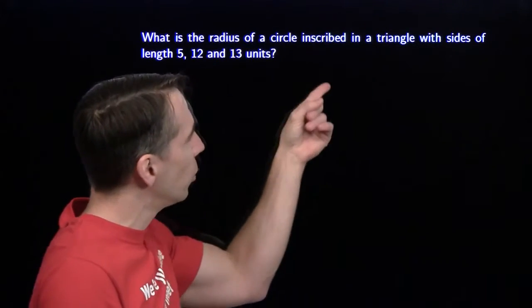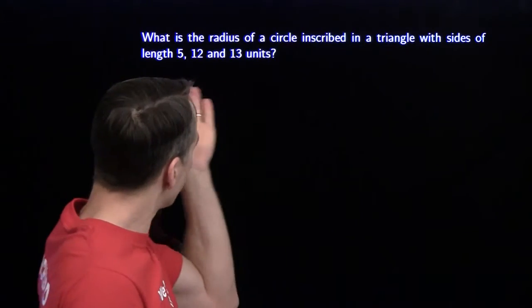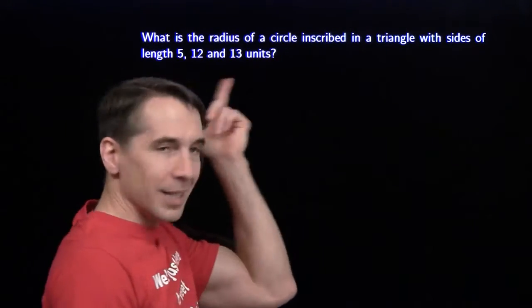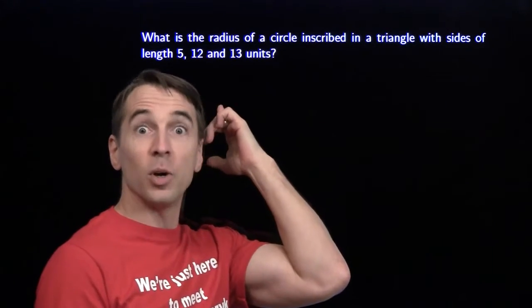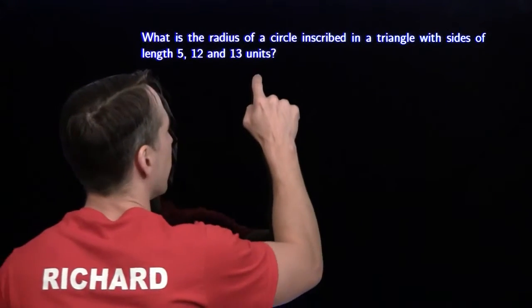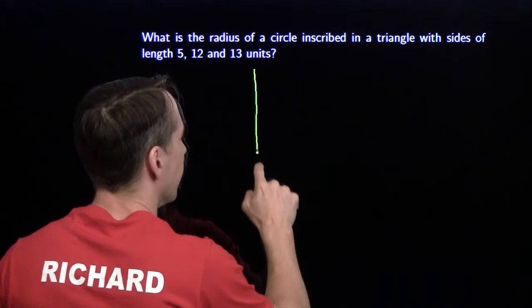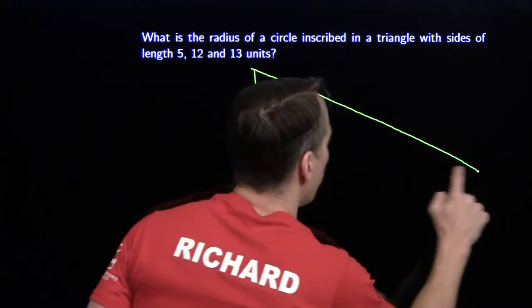We're looking for the radius of a circle inscribed in a triangle with sides of length 5, 12, and 13. Well, we recognize these numbers right here. 5 squared plus 12 squared is 13 squared. This is a 5, 12, 13 right triangle. So we're going to draw a right triangle. And we'll label what we know.